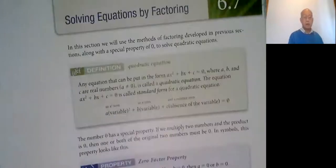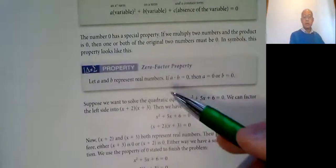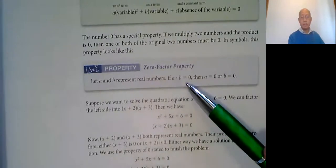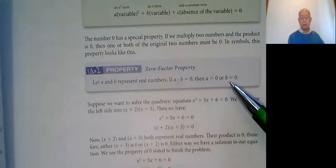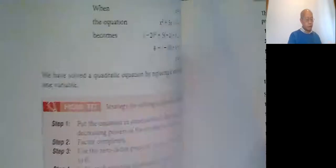These are notes for section 6.7. We'll be using the zero factor property with solving equations by factoring. This is on page 333. The key item here is the zero factor property: if a and b represent real numbers and a times b equals zero, then either a equals zero or b equals zero. So the product of two things is zero, one of them has got to be zero. We'll be using that over and over in this section.